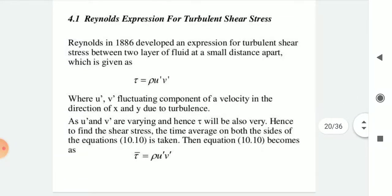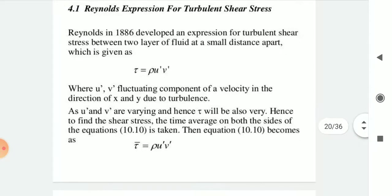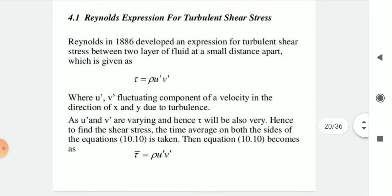Reynolds' expression for turbulent shear stress: Reynolds developed an expression for turbulent shear stress between two layers of fluid a small distance apart, given as τ = ρ·ū'v', where u' and v' are fluctuating components of velocity in the x and y directions due to turbulence. Since u' and v' are varying, τ also varies. To find the shear stress, the time average of both sides of the equation is taken, giving τ̄ = ρ·ū'v'.